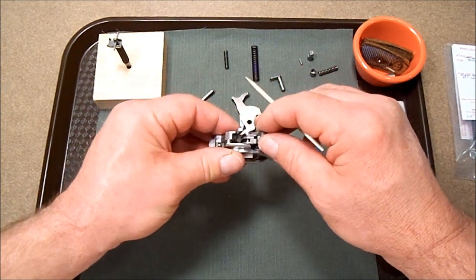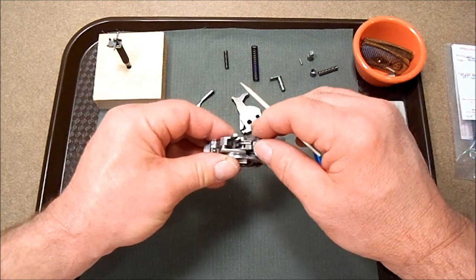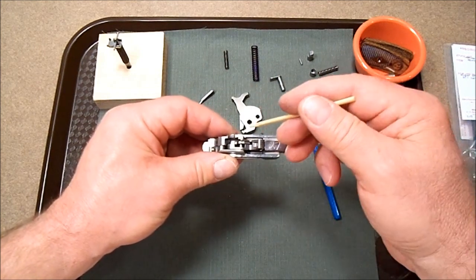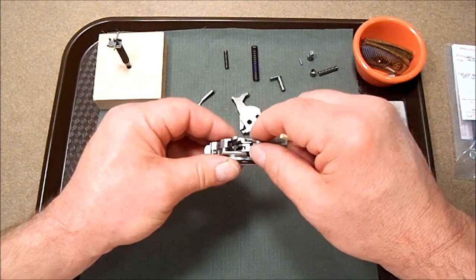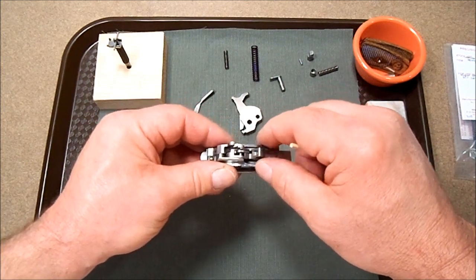Now I wanted to do that without any springs or anything in place so I could feel that and make sure that we don't have any binding. When we install those shims on either side of the trigger, we want to make sure there's no binding and that it's nice and free. And it is.